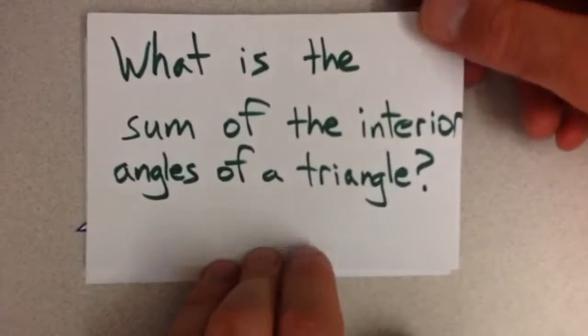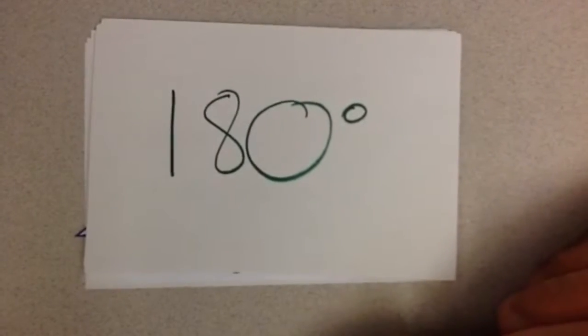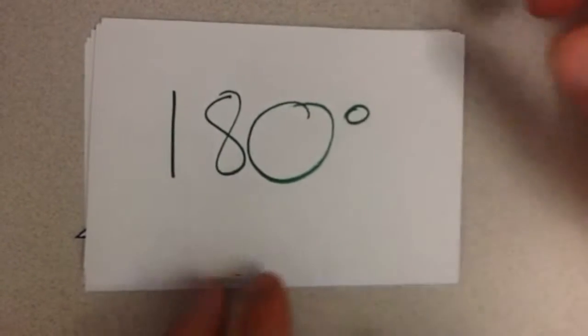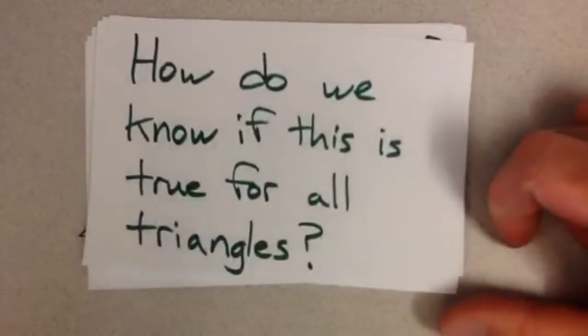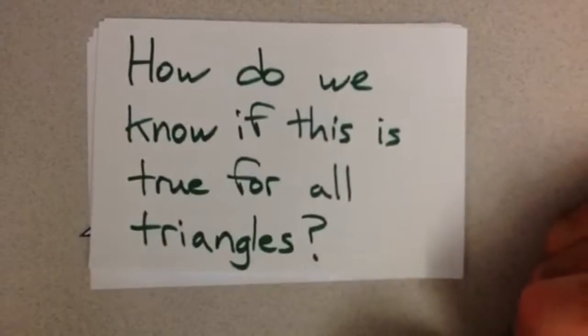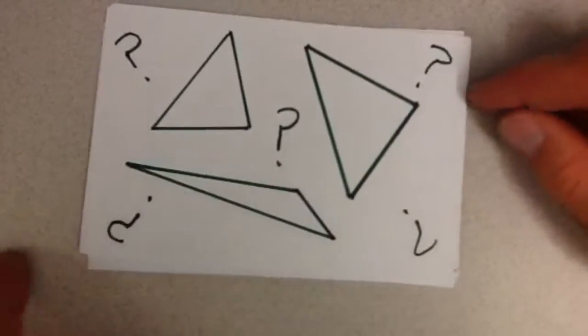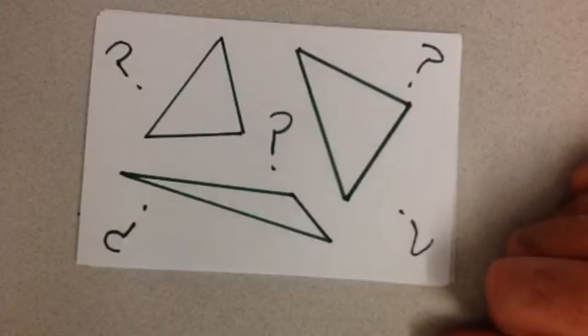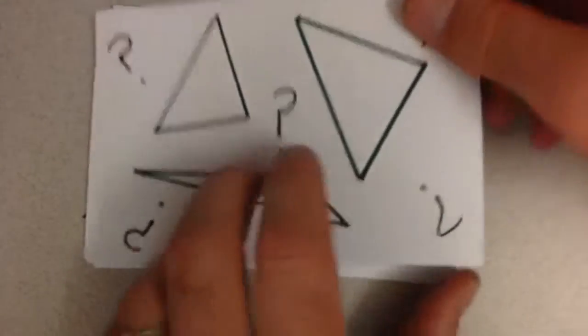So what is the sum of the interior angles of a triangle? You ask yourself 180 degrees, something that we already know. I knew this since elementary school, but how do we know if this is true for all triangles? We've got these different types of triangles. Does it work for any triangle?